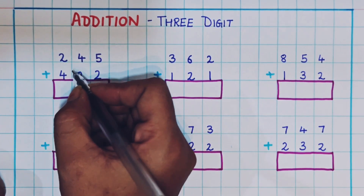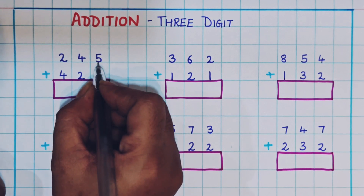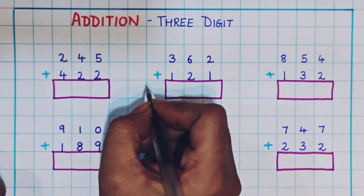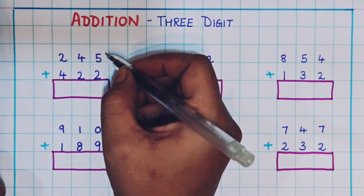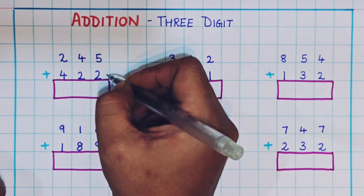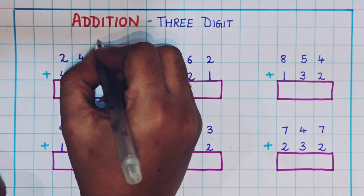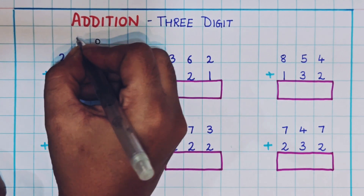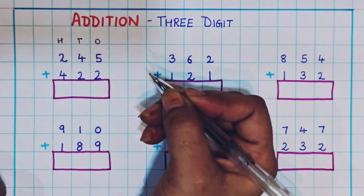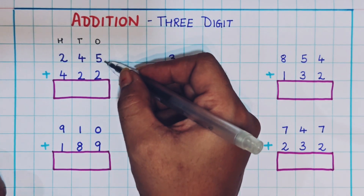Now let's see the first problem: 245 plus 422. Remember one thing: in addition, always the addition begins from the ones place first, then the tens place, then the hundreds place. So let's do the addition.